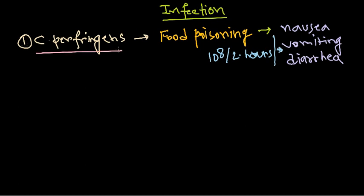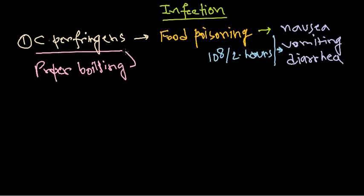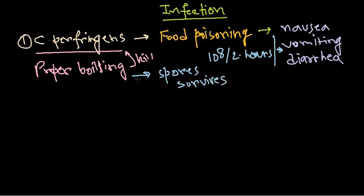Usually the vegetative cell of Clostridium perfringens is killed if it is boiled properly. Proper boiling will kill this bacteria, but if boiling is not proper, spores of Clostridium perfringens survive. As the spores survive, they will cause diseases and dangerous effects like nausea, vomiting, and diarrhea.